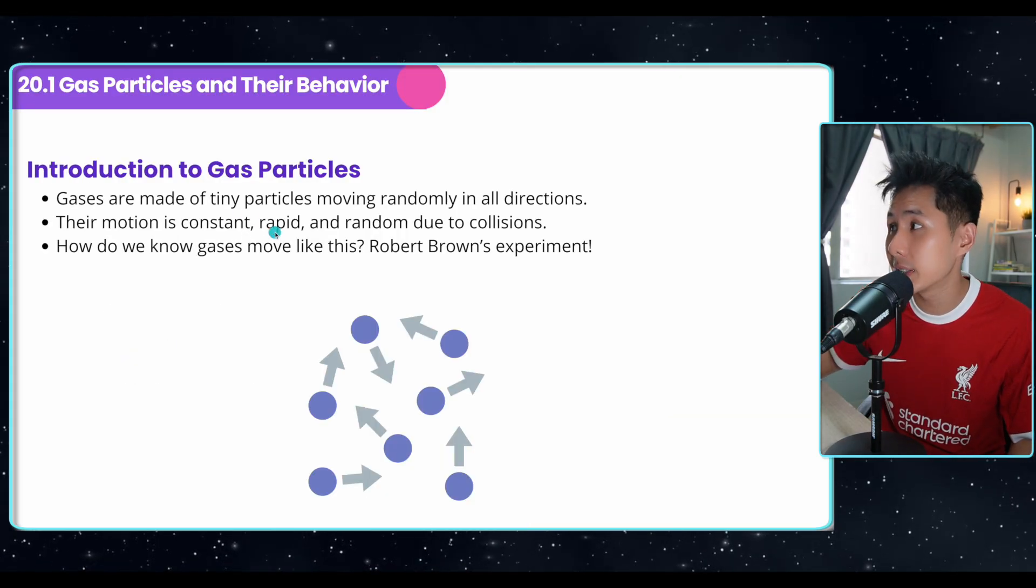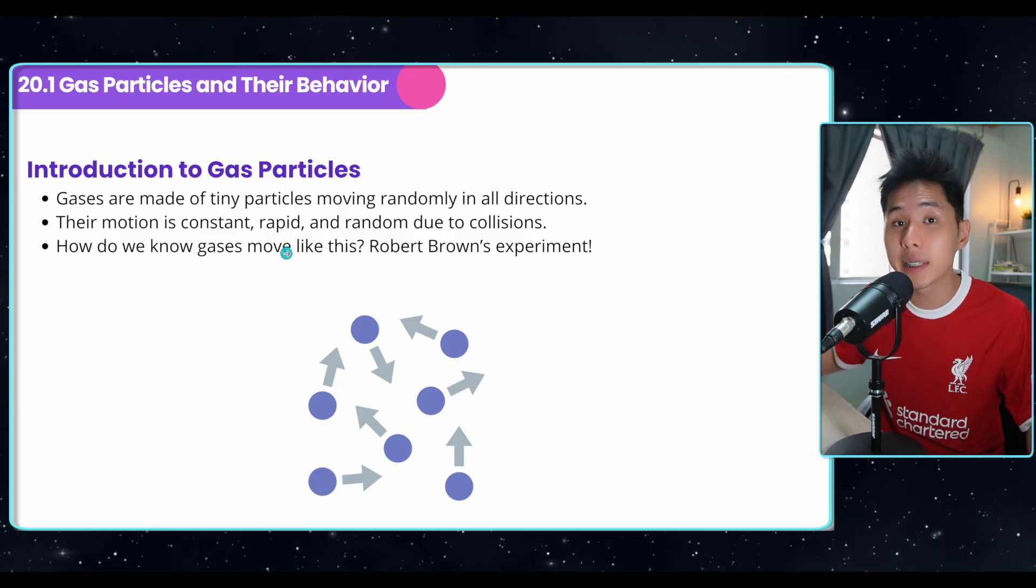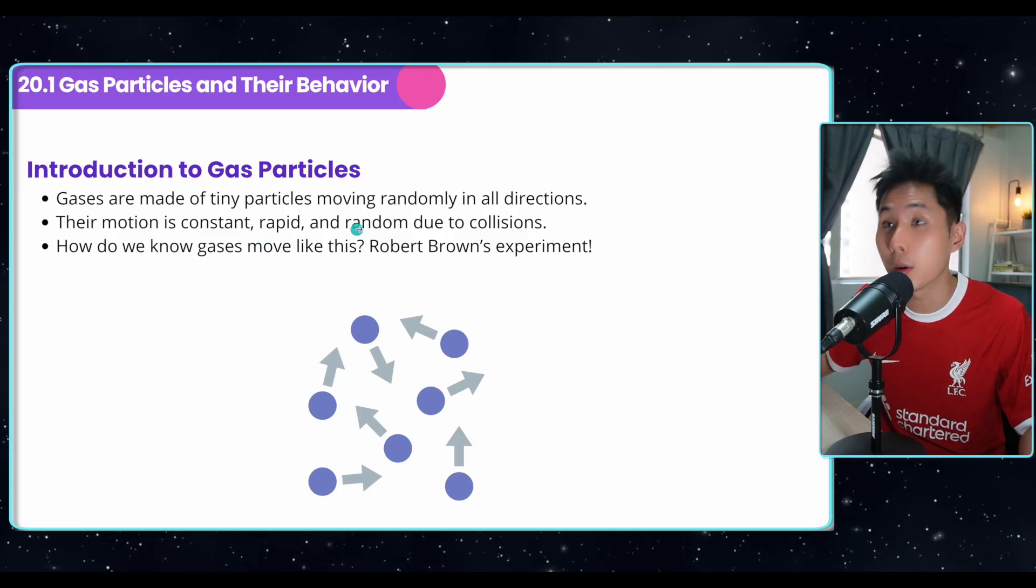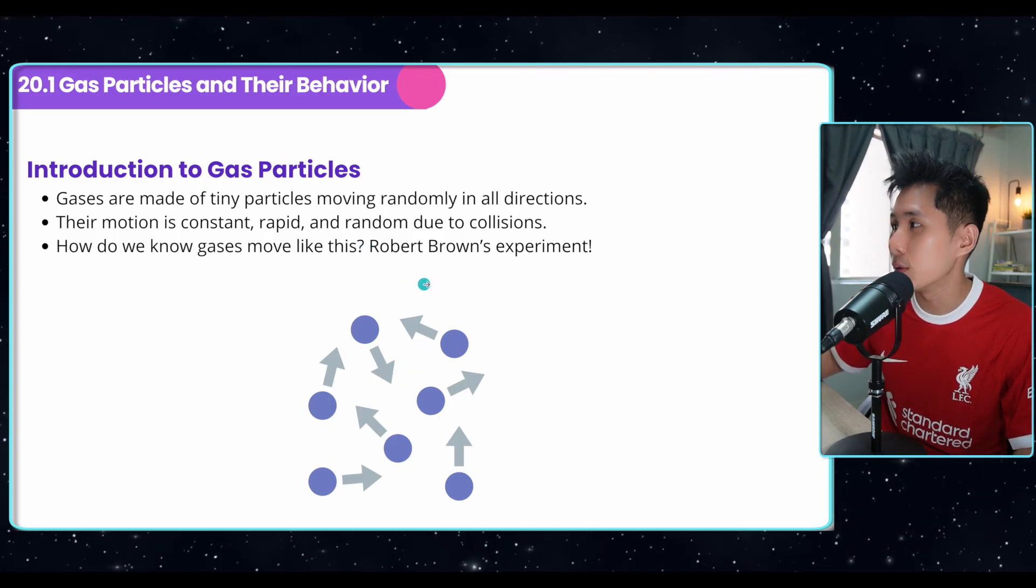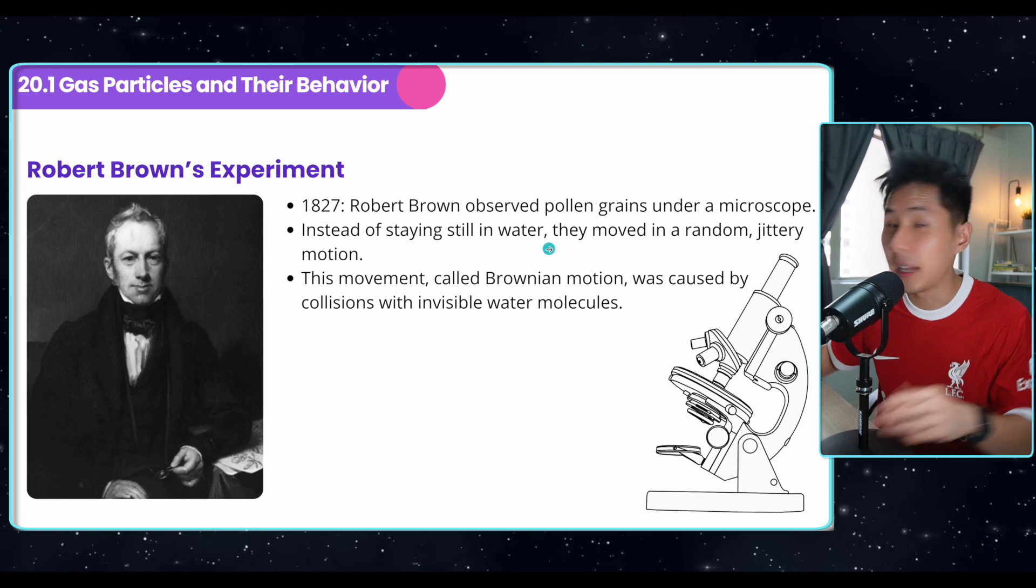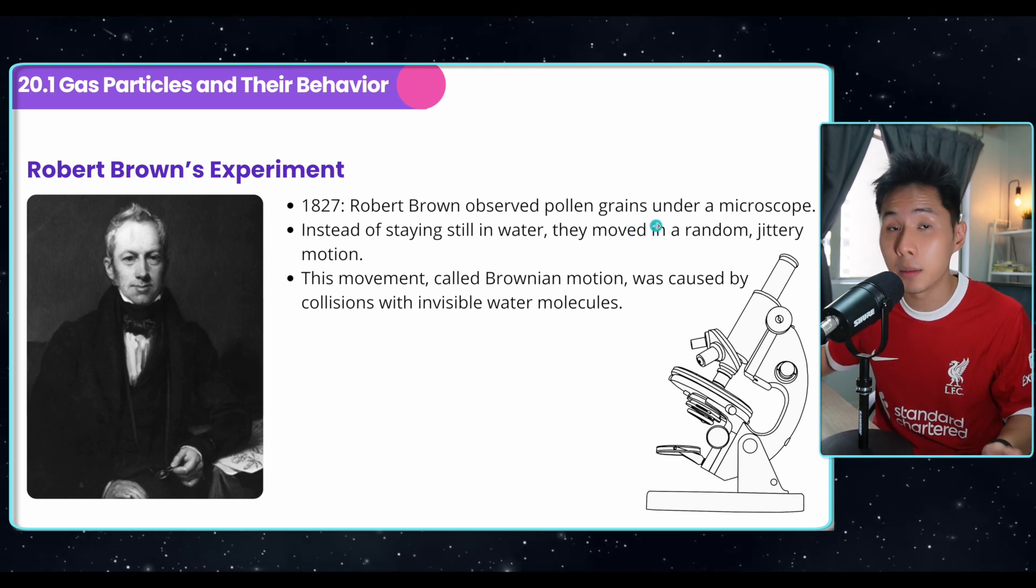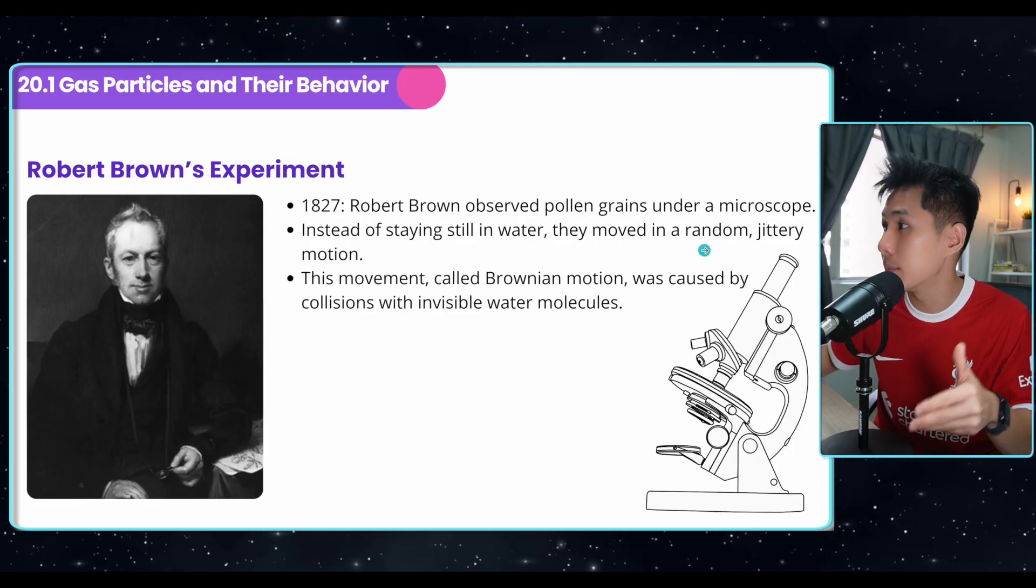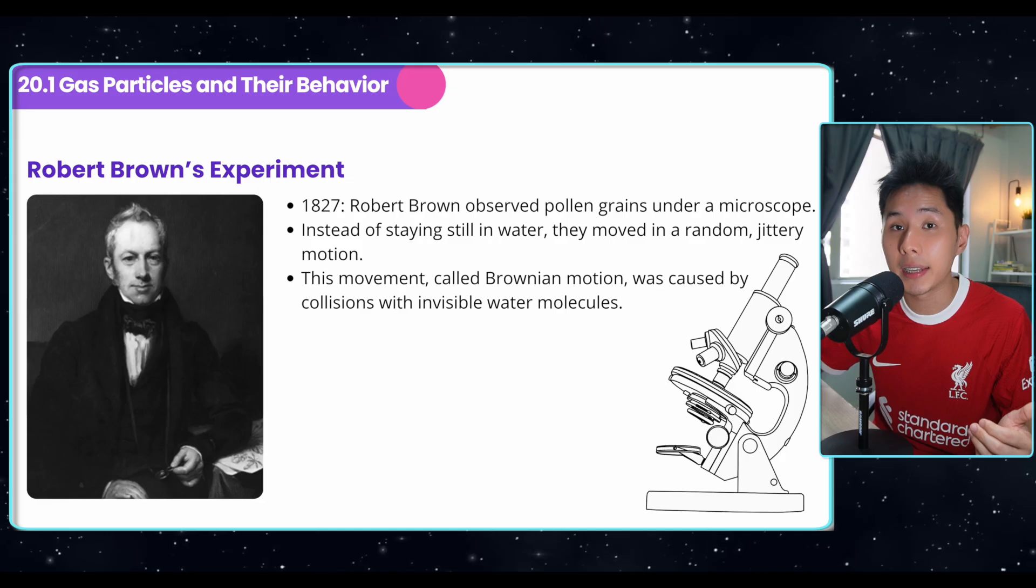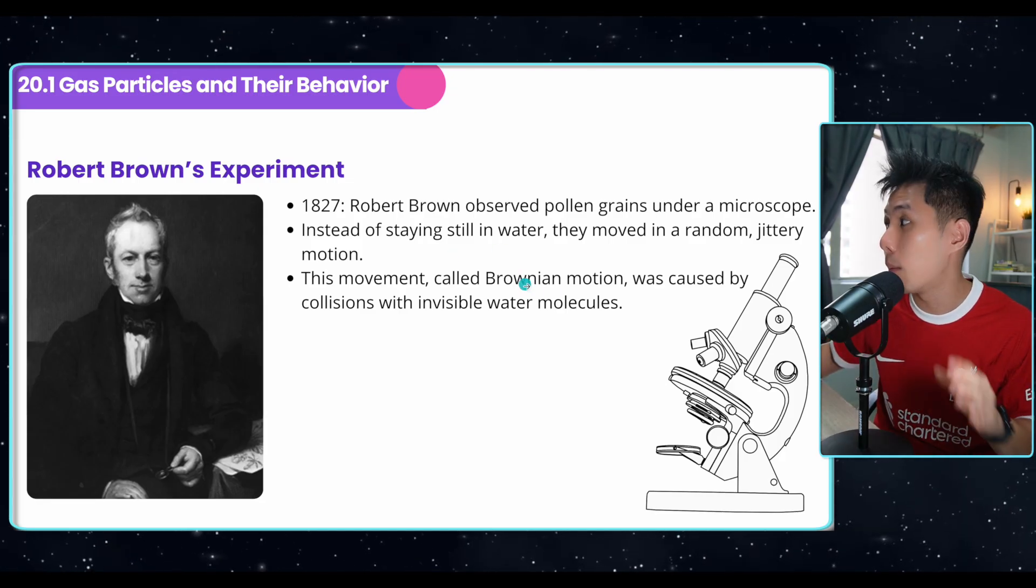Just an introduction to gas particles, they move randomly and their motion is constant, rapid, and random due to collision. But how do we know that gas moves like that? It's due to Robert Brown's experiment. In 1827, he observed pollen grain under a microscope, and he realized that these pollen grains move in a random jittery motion. Later he figured out that they move because they're hit by the particles, and this movement is called Brownian motion.